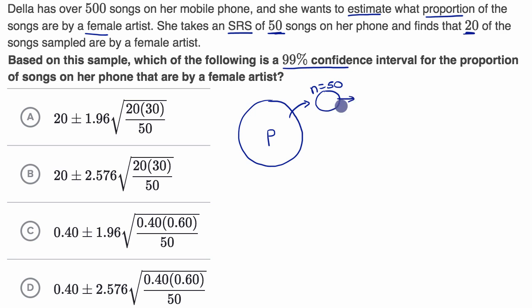From that, she calculates a sample proportion, which we denote with P hat, and she finds that 20 out of the 50 are sung by a female, which is 0.4, and then she wants to construct a 99% confidence interval.